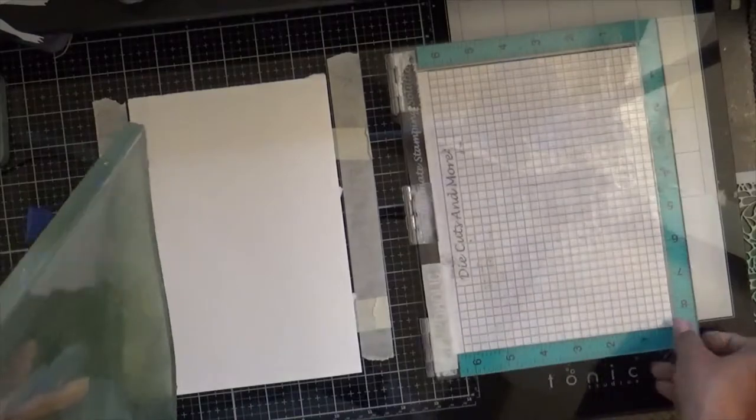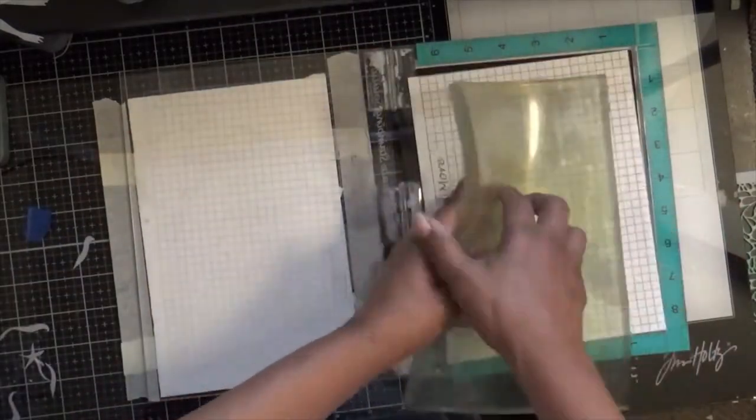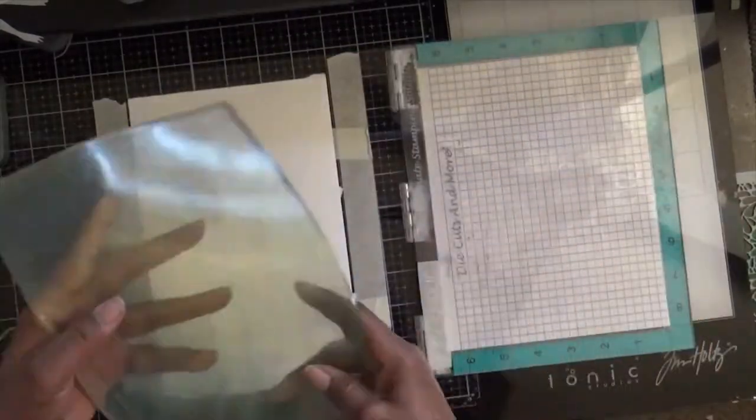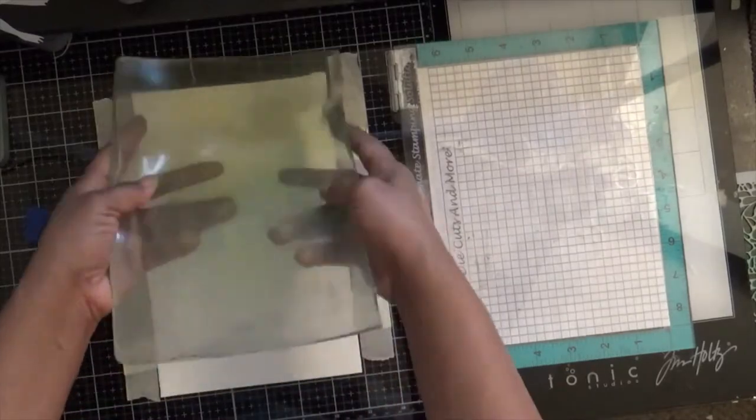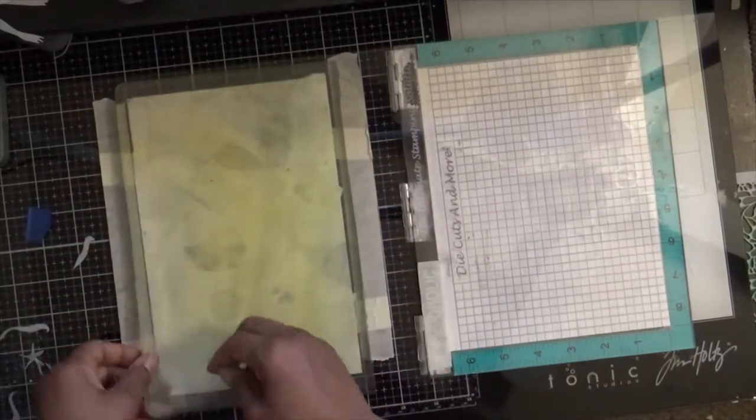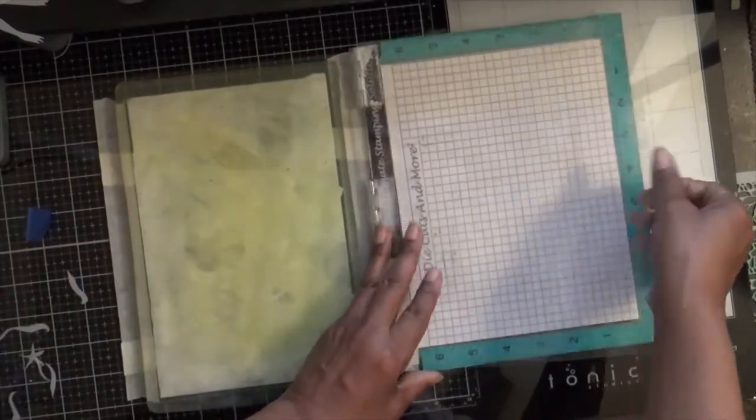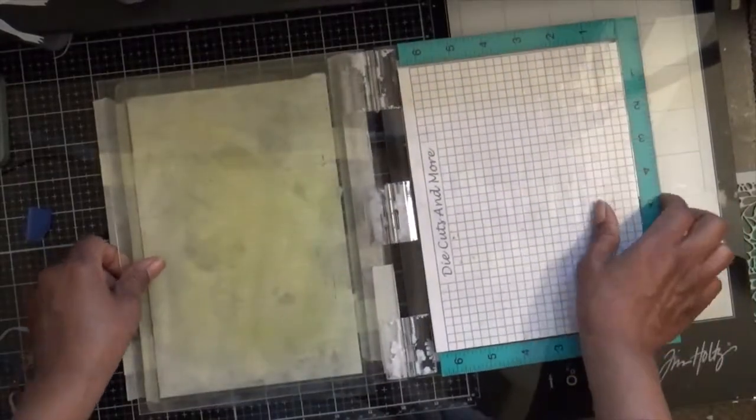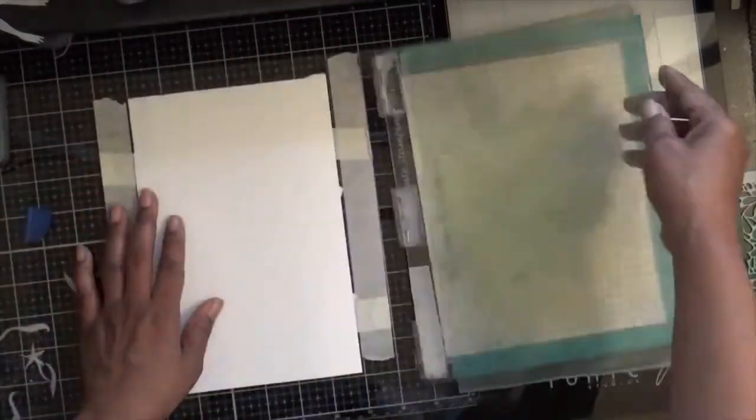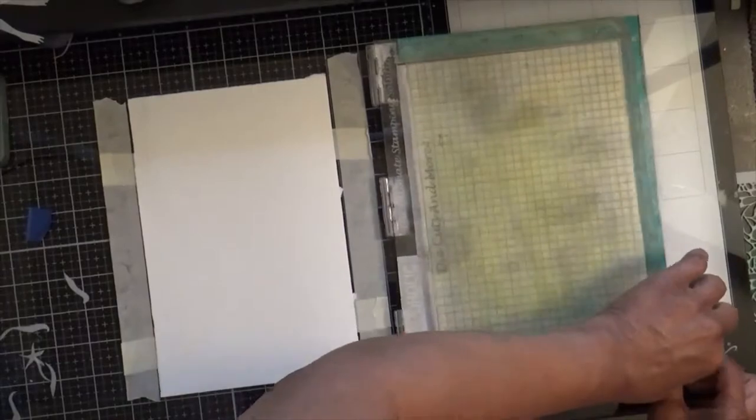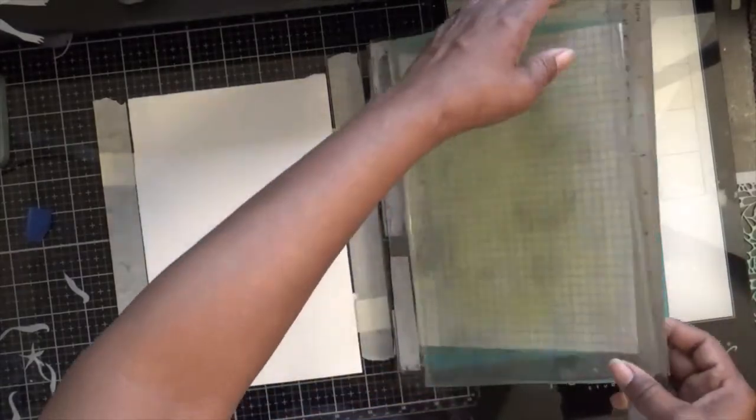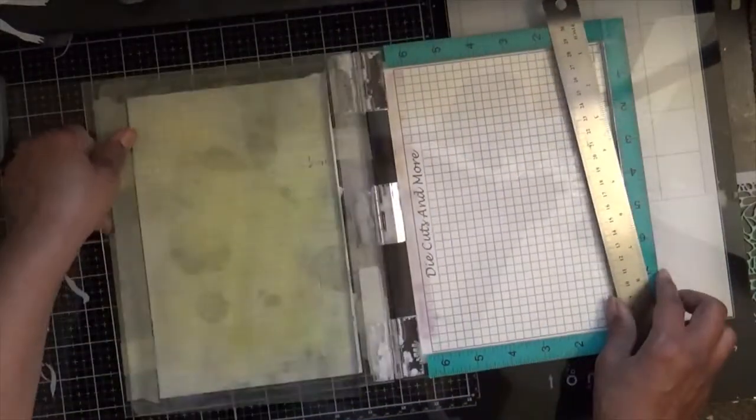The way Jennifer McGuire was using it, she put the jelly plate on the inside of the Misti door where my jelly plate won't fit on the inside. It's a little larger because my page is a little larger. I've cut my jelly plate down, by the way, and so I'm putting mine on the outside of the door. That's my twist on her technique.